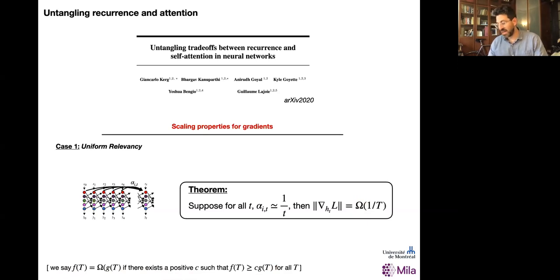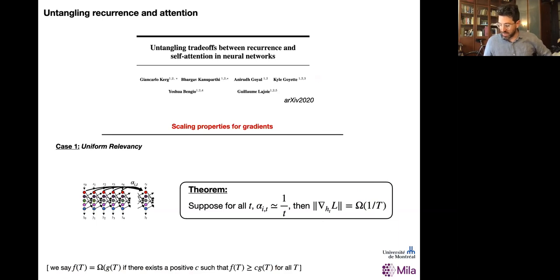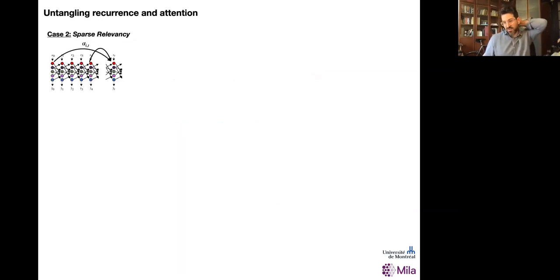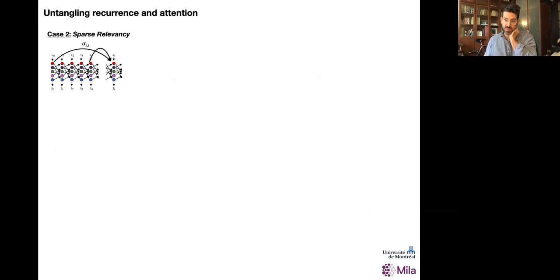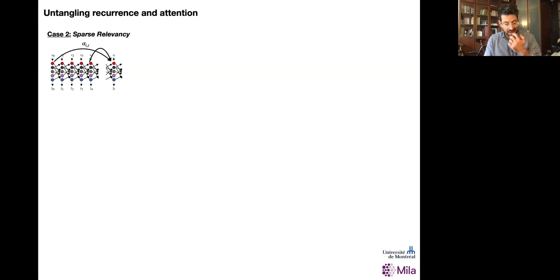This is nice to see — there's a 1/T scaling law for gradients in these particular contexts — but this is for the uniform case, which is not necessarily what happens in practice. The second case, which we call sparse relevancy, is more akin to what we see in practice. This refers to the case where tasks may depend on some past states but not all of them. This is what sparse attentive backtracking was aiming to exploit: saying there are events in the past that are more important than others, and these are the only ones important to attend to. You lighten the load of computation and the load of memorization.